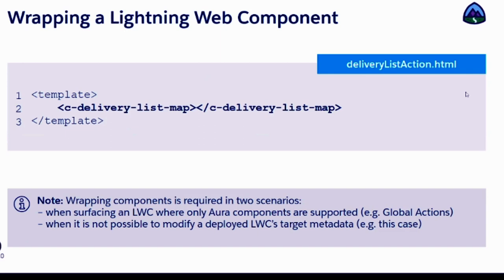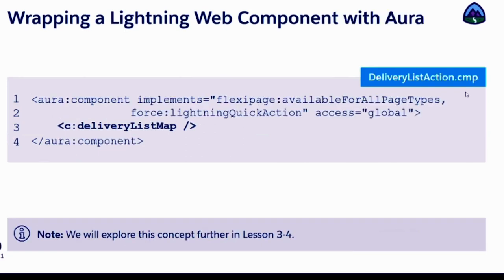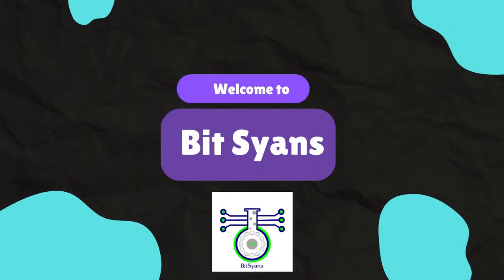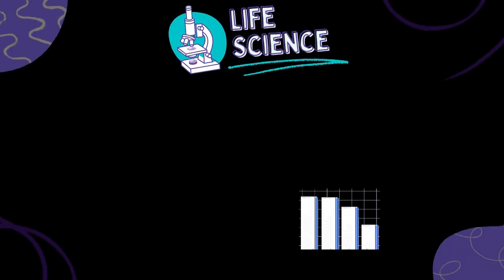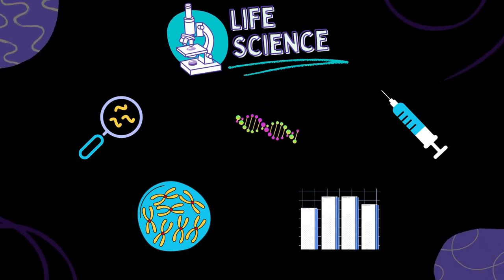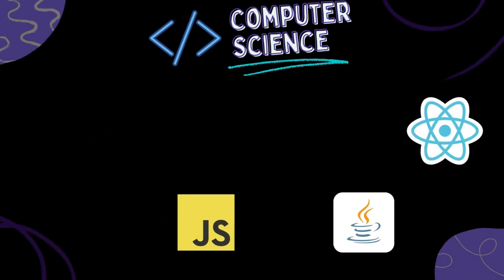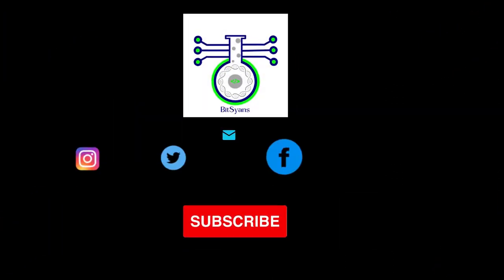To wrap your LWC in an Aura component, you use the Aura component tag and call your LWC inside the body of the Aura component. When calling an LWC inside an Aura context, you do NOT use kebab-case — you use `namespace:componentName`. It is case-sensitive, so if you declared it with a lowercase letter, it must be called with the same casing. With these advanced techniques in your toolkit, you're well-equipped to harness the full potential of Salesforce Lightning Web Components. Stay tuned for more tutorials, and don't forget to like and subscribe. Thank you for watching and happy coding!